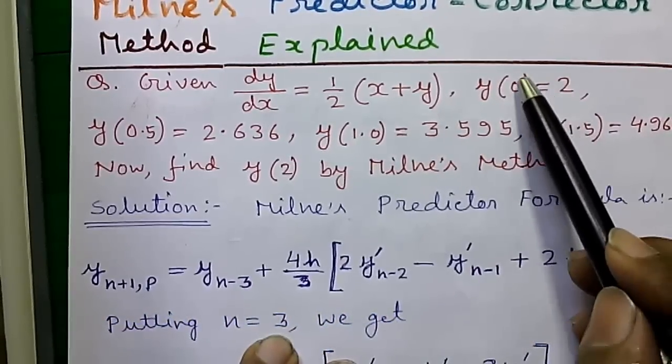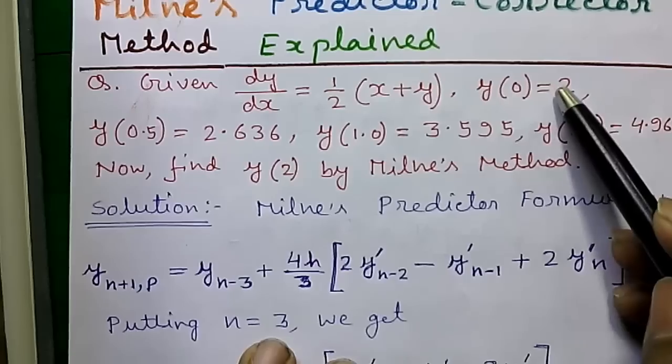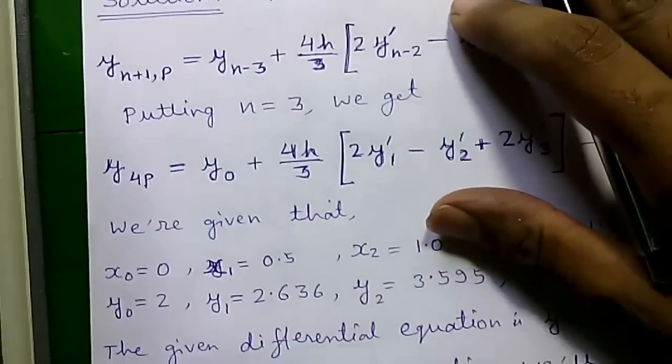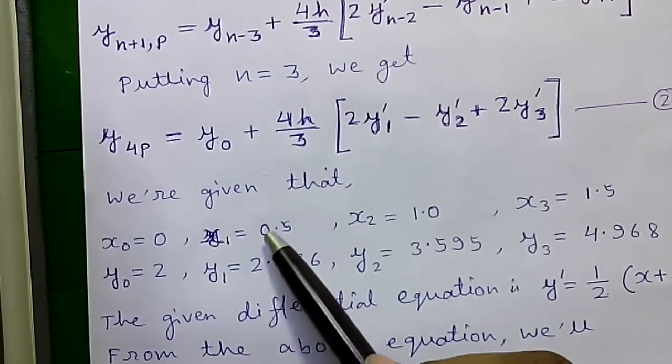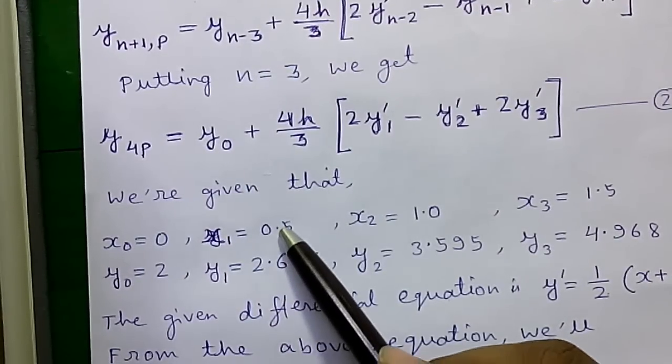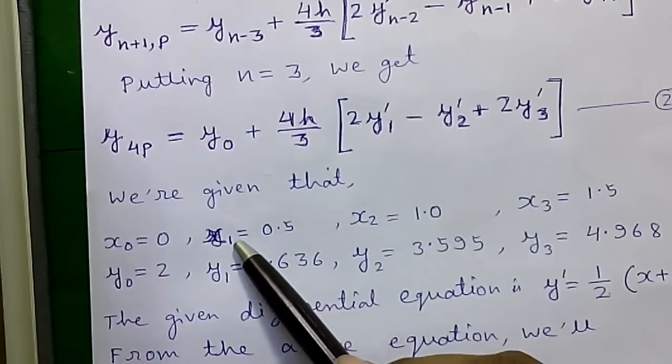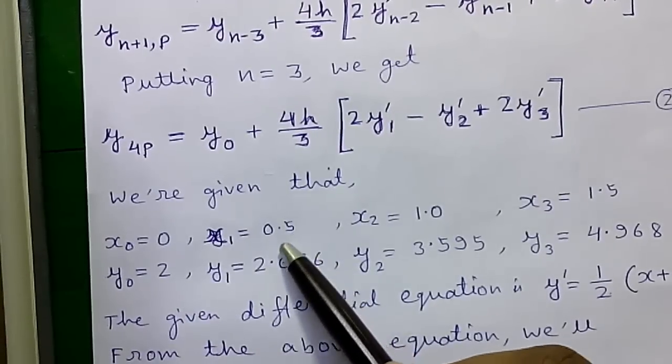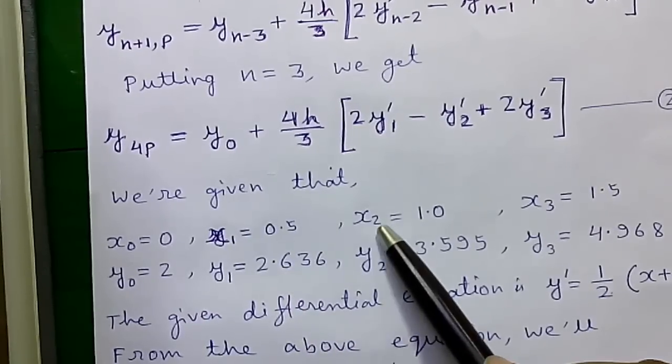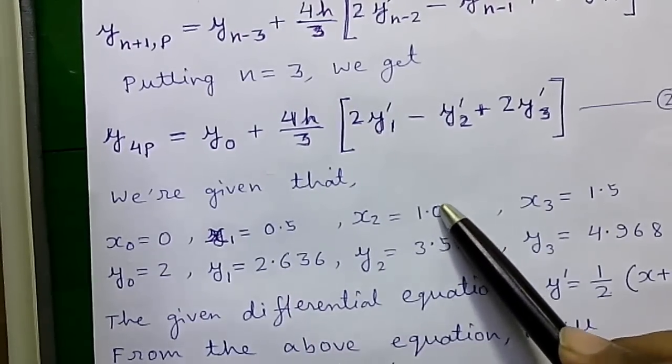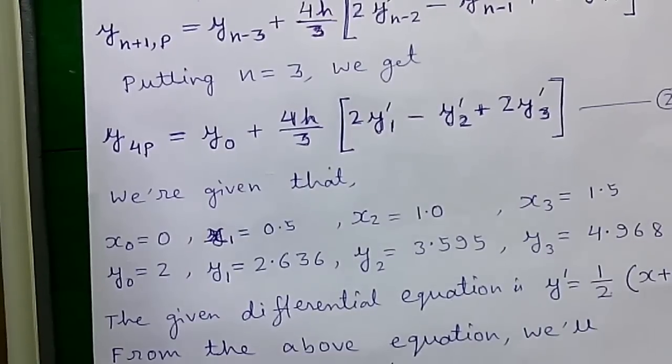So here all the values are given. These are our first value: y(0) equals 2, so x(0) equals 0 and y(0) equals 2. Next y(0.5) equals 2.636, that means x(1) equals 0.5. Similarly if you take all the values you will get a chart like this.